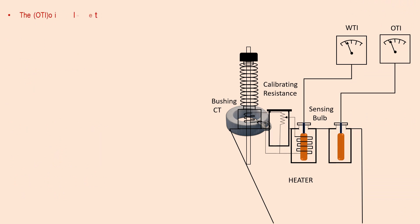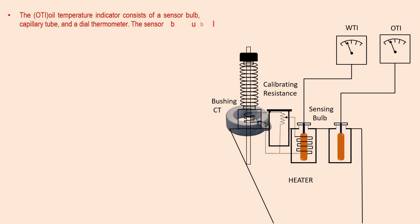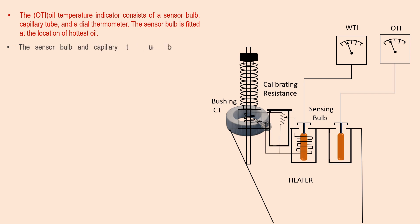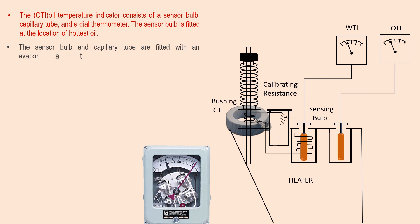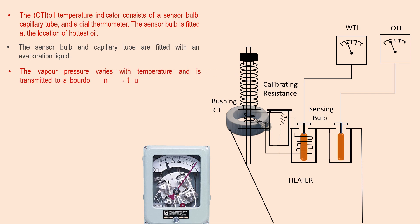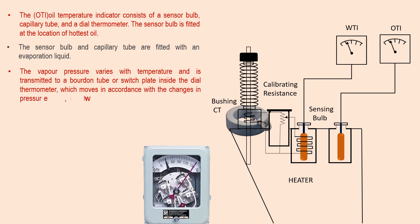The OTI — Oil Temperature Indicator — consists of a sensor valve, capillary tube, and a dial thermometer. The sensor valve is fitted at the location of the hottest oil. The sensor valve and capillary tube are fitted with an evaporation valve. The vapor pressure varies with temperature and is transmitted to a Bourdon tube or switch plate inside the dial thermometer, which moves in accordance with the changes in pressure, which is proportional to the temperature.